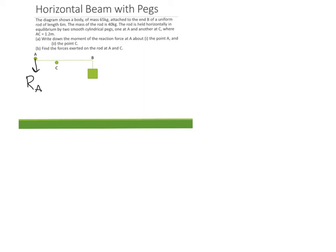Similar thing with C, it can only provide a force upwards RC. So the pegs basically push it in the direction towards the beam.